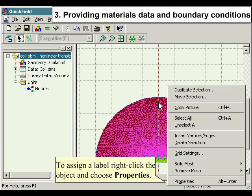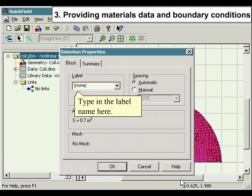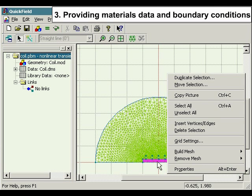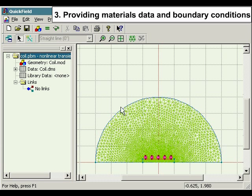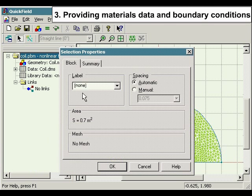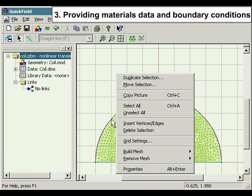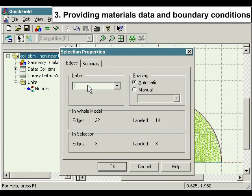To assign a label, right click the object and choose Properties. Type in the label name here. Type in the label mark.